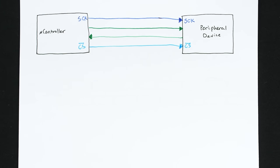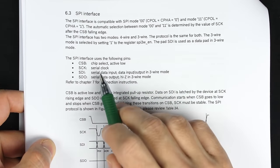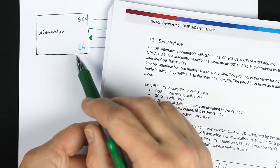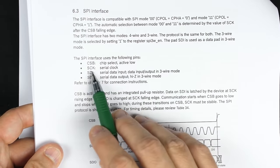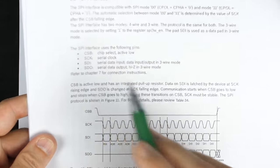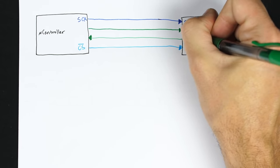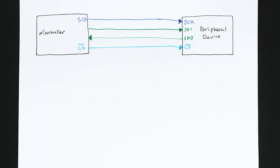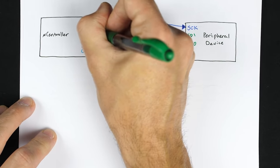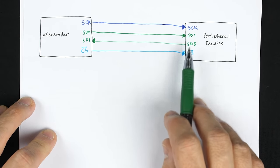There's actually no official standard for SPI, so you may see different naming conventions for these pins. For example, looking at the datasheet for that temperature sensor, we see four pins: CSB (chip select bar — active low), SCK (serial clock), and then for the data pins it uses SDI and SDO — serial data in and serial data out. Since this is the peripheral device, SDI is data coming in and SDO is data going out. On the microcontroller side, you'd flip that around: it has serial data out going to the peripheral's serial data in, and vice versa.